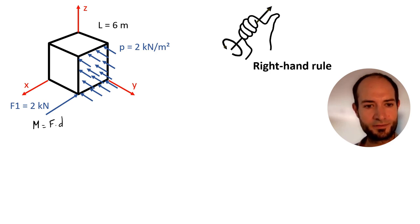So just as a reminder, f times d. Let's go with y. My due to f1: the load is 2 kN. And now the distance to y, the load is at ground level, so the distance is going to be 0, so we have no moment.